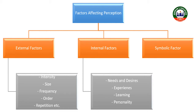Another important factor that affects perception is mental set. Mental set refers to the preparedness or readiness to receive some sensory input. For example, if we are expecting the arrival of a train, even with a lot of noise and disturbance around us, we will still be able to hear that train's sound. That means we are mentally ready and prepared to receive that specific sensory input.